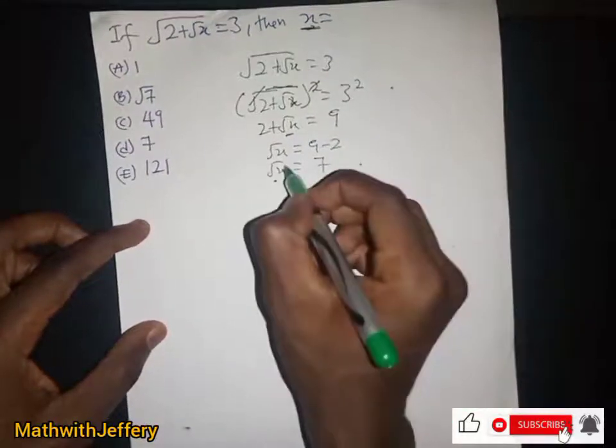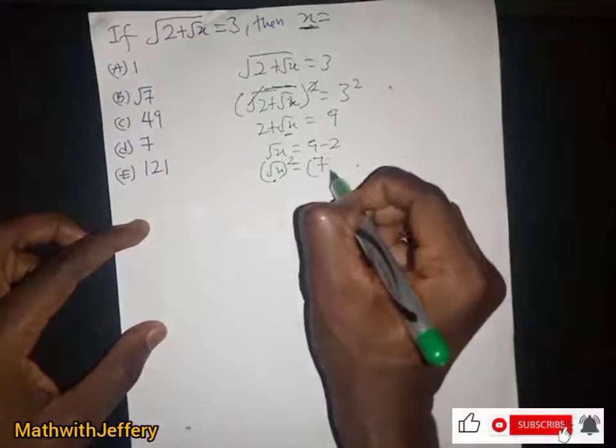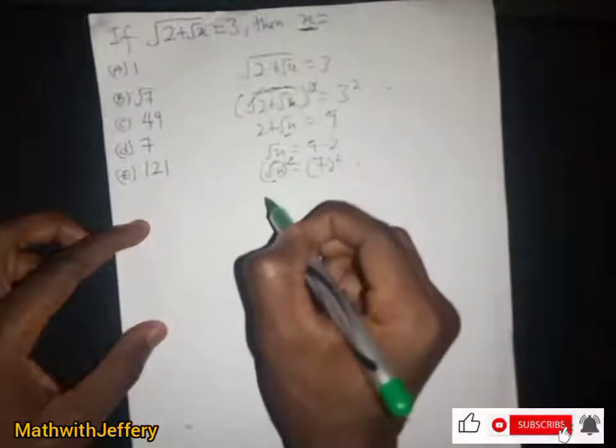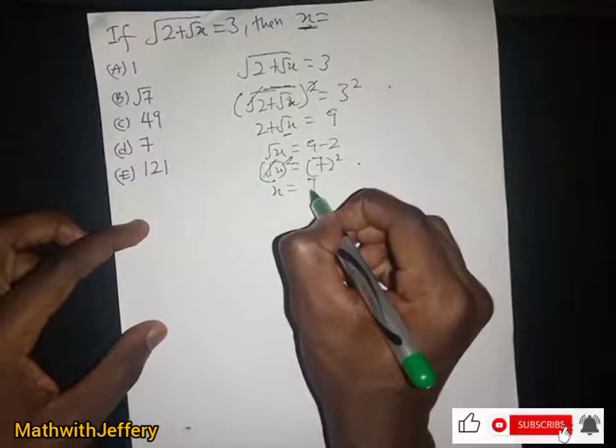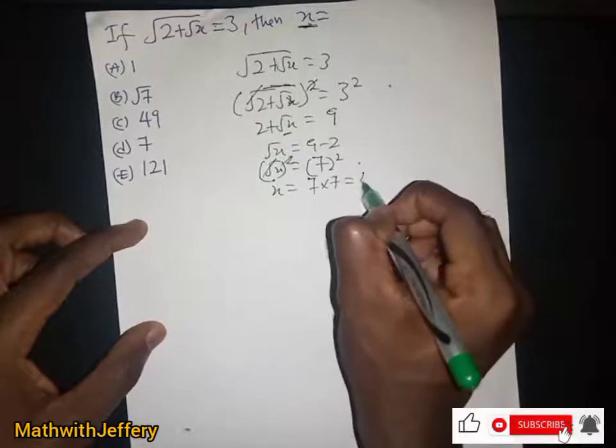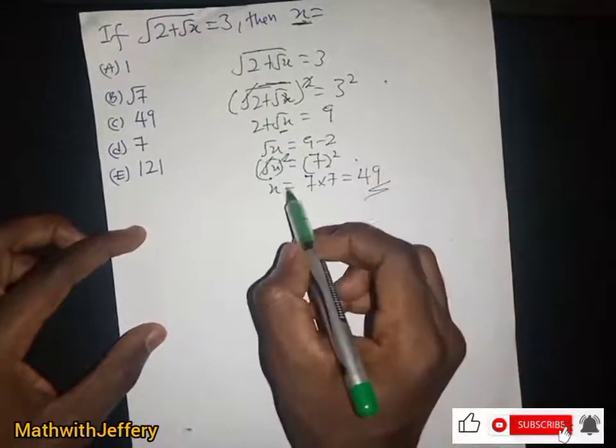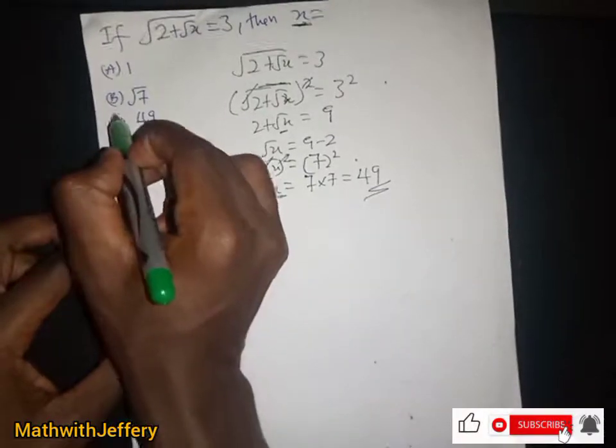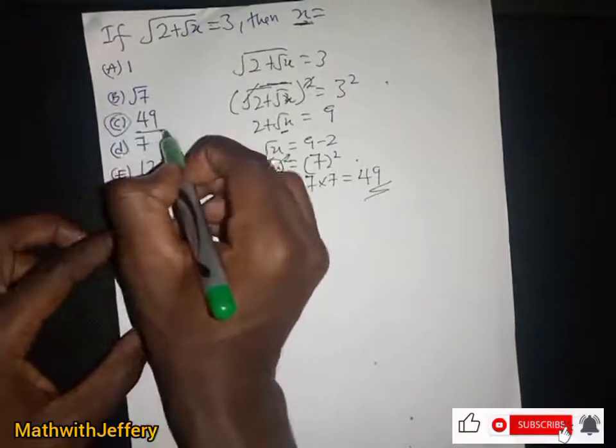Now to find x, what do we do? So we square both sides again. This gets rid of the square root and x here is just equal to 7 squared, which is 7 times 7, which is just 49. So x in this case is just 49 and that will be C.